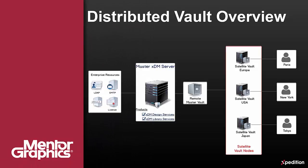Let's review the architecture of a distributed vault deployment. We have a central master XDM server configured with license servers and all other optional enterprise resources, such as LDAP, SMTP, and an Oracle database. A master vault is recommended to be deployed on a dedicated host machine remotely from the master XDM server. Based on the location of the clients, we deploy satellite vaults close to the client's location. Clients using the local satellite vault will enjoy significant performance improvements during upload and download of design data, as well as XDM library managed blocks.